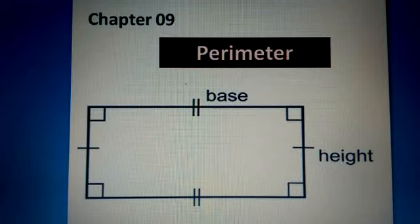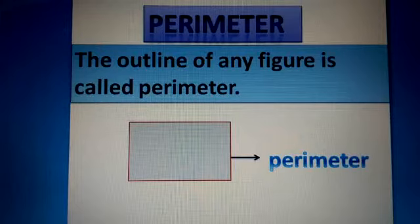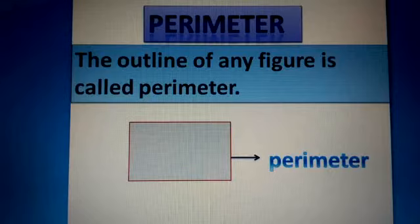Here is the definition of a perimeter: the outline of any figure is called the perimeter. Kisi bhi figure ki outline kya kehlati hai — perimeter. Here you can see a picture of a rectangle. The rectangle is highlighted by a red color, so the highlighted area of the rectangle is called its perimeter.